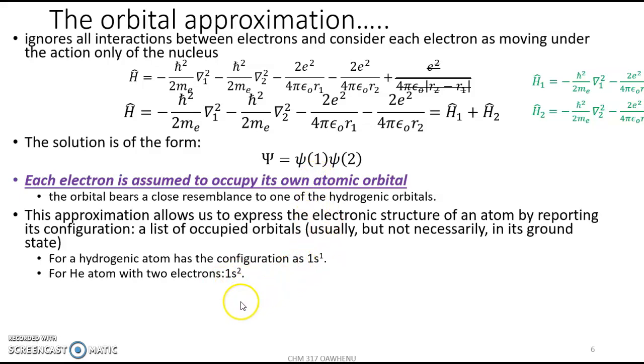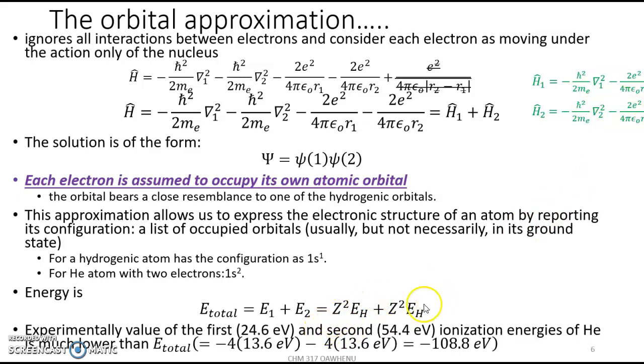The energy of helium will now also simply be energy of electron one, E1, plus energy of electron two. Which is also similar to the energy of the hydrogen atom. It will simply be Z squared times energy of a hydrogen-like system. Because the Hamiltonian has turned into the Hamiltonian of two hydrogen-like systems combined together.